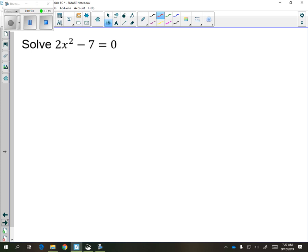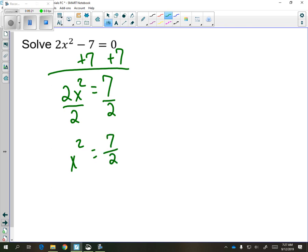In this particular case, we're going to isolate the variable. So we're going to bring over the 7 to get 2x squared equals 7. And we're going to keep getting x by itself by dividing by 2. So x squared is equal to 7 halves.